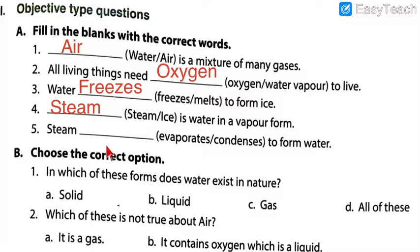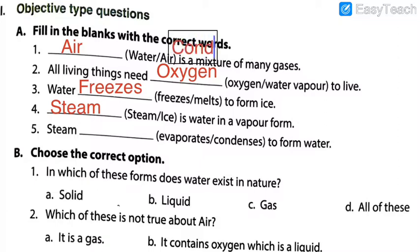Number five: steam dash to form water. So what happens to steam when it is converted into water? Does it evaporate or does it condense? Obviously, steam condenses to form water. When the vapor comes up on the lid, it condenses and becomes water droplets — if you remember the concept from the previous lecture. So the answer is condenses.